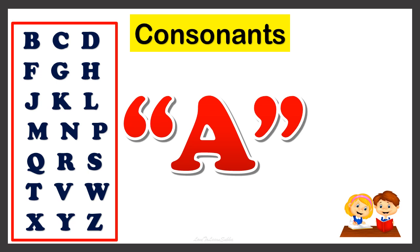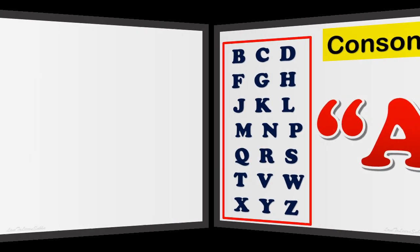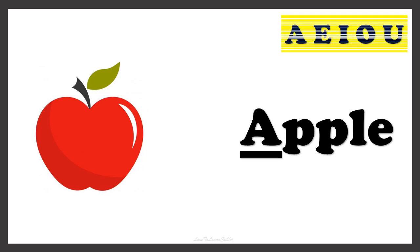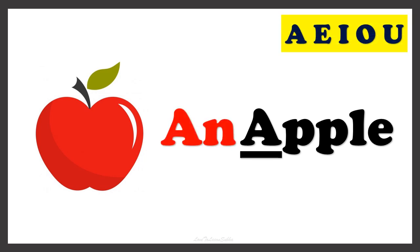Now let's get to know more about article usage with the help of example pictures. Here in our examples we have a picture. Can you guess the name of this one? Yes, it's apple. To understand the usage of A and AN, we have to find the first letter of the word apple. In apple, the word starts with the vowel A. So whenever a word starts with a vowel, we use the article AN, and we say it as AN APPLE.